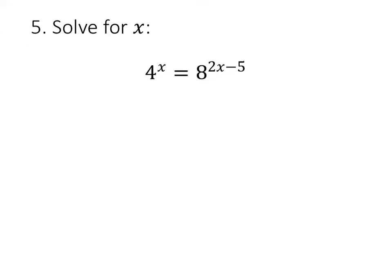Finally, we have this equation where we have a 4 as the base on the left and an 8 as the base on the bottom. Now we can't easily write 8 as a power of 4 or 4 as a power of 8, but what we can do is write both of those as powers of 2. 4 is 2 squared, 8 is 2 cubed. So multiplying our exponents, we get 2 to the 2x equals 2 to the 6x minus 15.